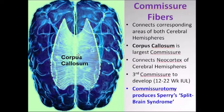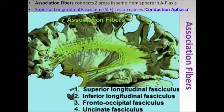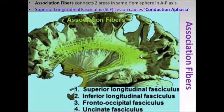Just to give you a quick overview, there's something called the commissural fibers. The largest commissural fiber is the corpus callosum, which connects the neocortex of both hemispheres. There's also something called association fibers, which run in an anterior-posterior axis and connect different regions of the brain in each hemisphere.